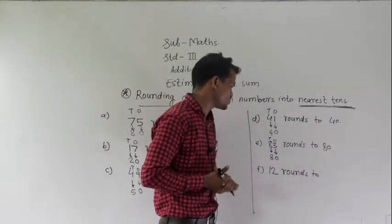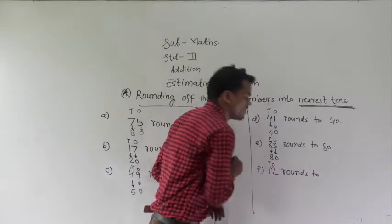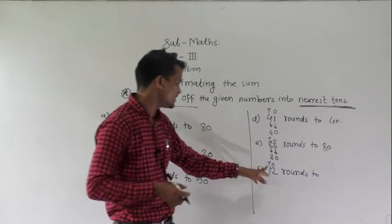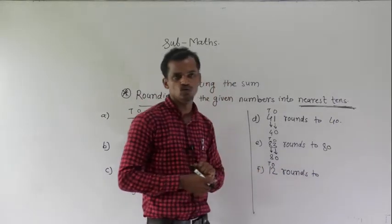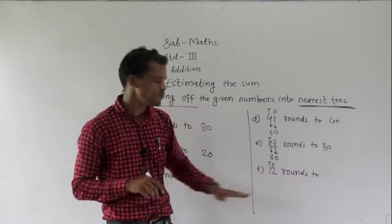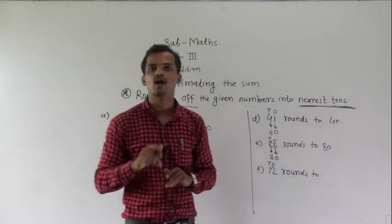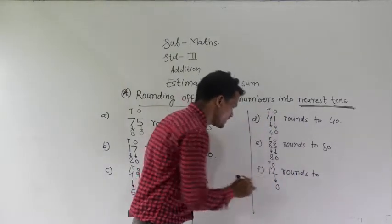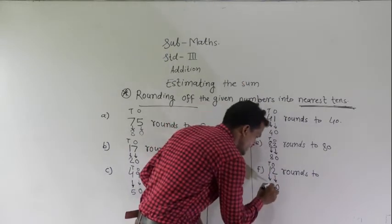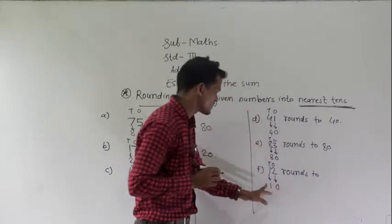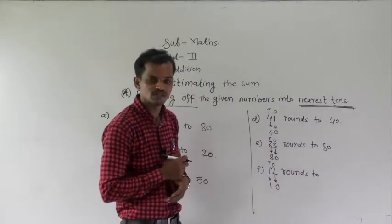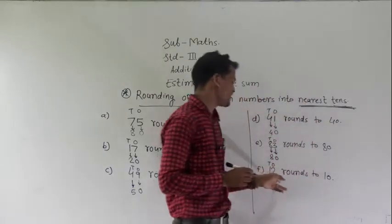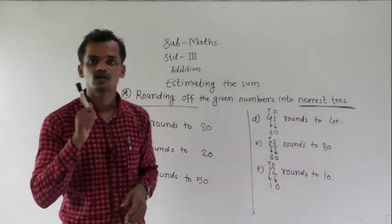Example F: 12 rounds to nearest 10. The ones place digit is 2, which is smaller than 5. So this 12 number will be rounded down. Write 0 under the 2 and the tens place digit remains the same. So 12 rounds to 10.